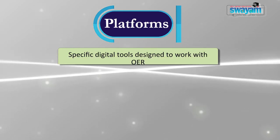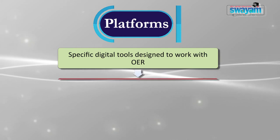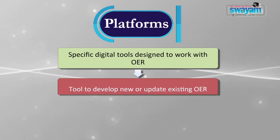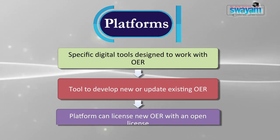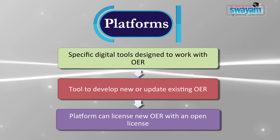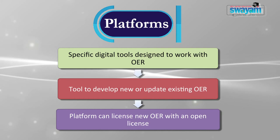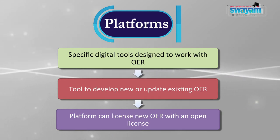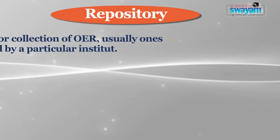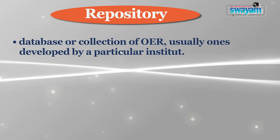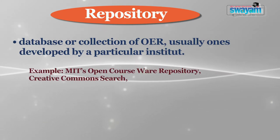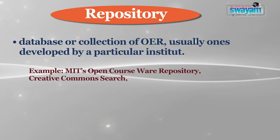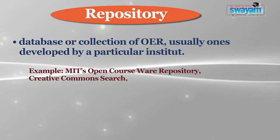The next category is platforms. By platform we mean specific digital tools designed to do something with open educational resources, such as tools to develop new or adapt existing OERs, or to license new OERs with an open license. An example is WikiEducator, which provides an online environment for authoring new resources. Next is repository — a database or collection of OERs, usually developed by a particular institution. Well-known examples include MIT's OpenCourseWare repository, Creative Commons search, OER Commons, and MERLOT.